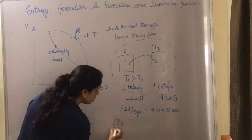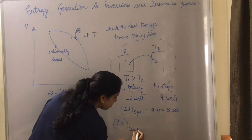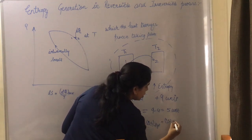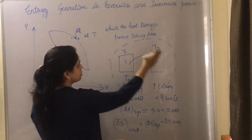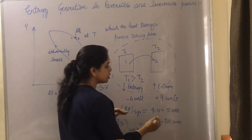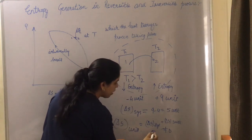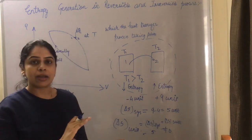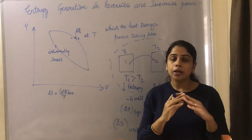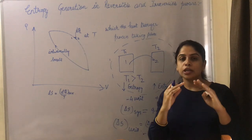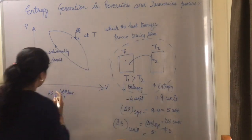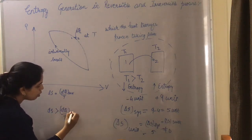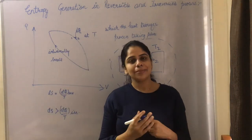Now let's find the entropy change of the universe, which is the sum of entropy change of the system plus entropy change of the surroundings. Since there is no heat interaction with the surroundings, the entropy of the surroundings is 0, and the entropy of the system is 5. So the entropy of the universe increases by 5 units. For any irreversible process, the entropy change is always greater than DQ/T.